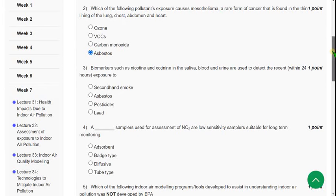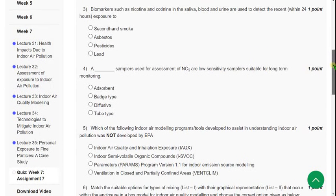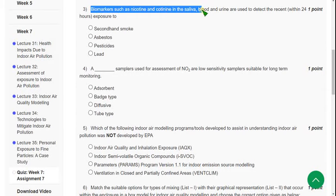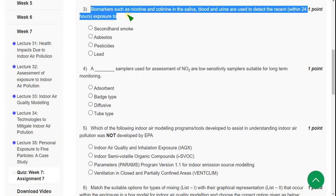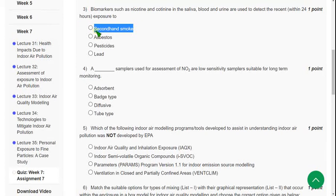Moving on to the third one: Biomarkers such as nicotine and cotinine in the saliva, blood, and urine are used to detect the recent exposure to NO2. So what will these detect? Those will detect second-hand smoke. So mark first option as correct answer for third question.